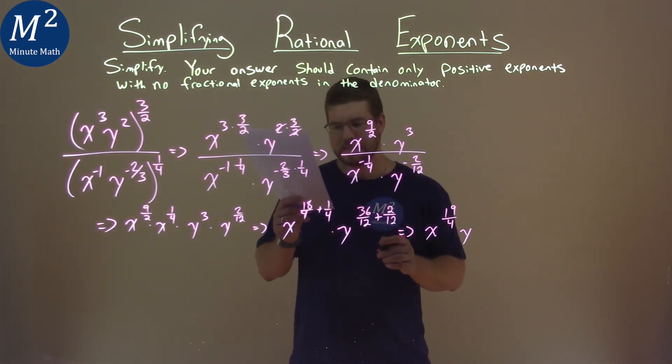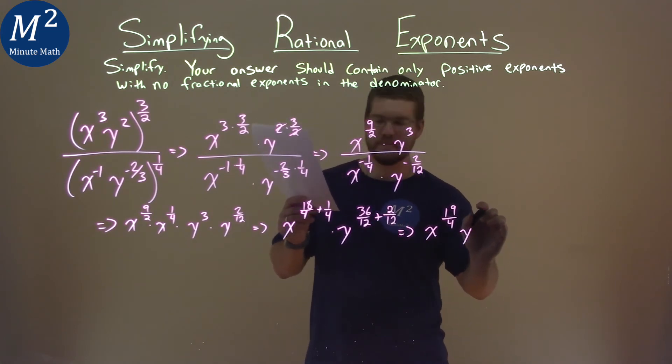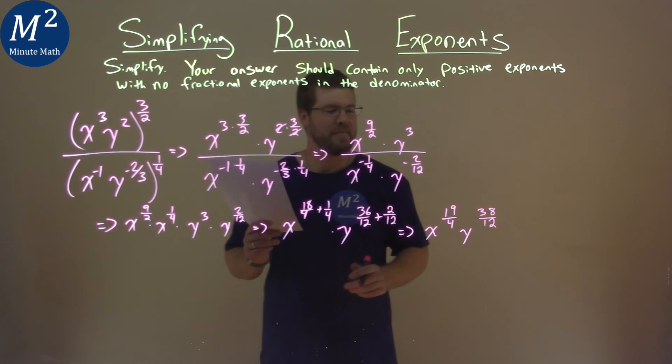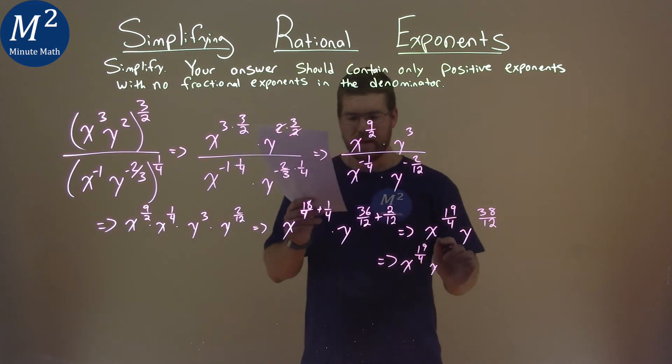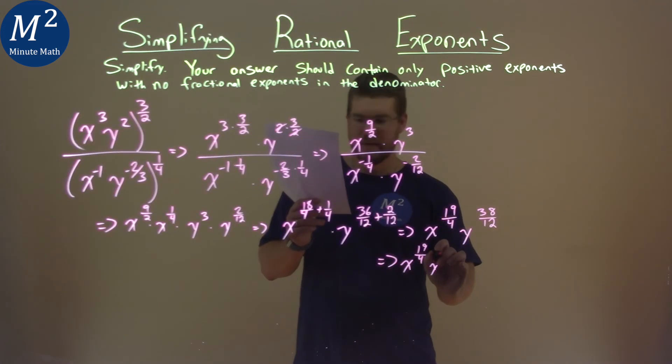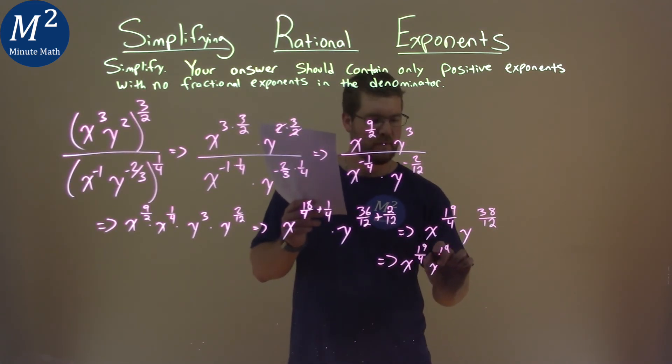is thirty-eight over twelve, right? And then that simplifies. We have x to the nineteen-fourths, and we have y to the nineteen over six.